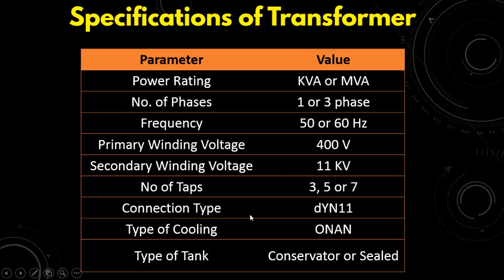Here is the connection type which says DYN11. So this is a convention which means that D stands for delta and Y stands for star. So primary is in delta and secondary winding is in star. And N is for the neutral. As it is written in the capital letter, it means that star point has a neutral.